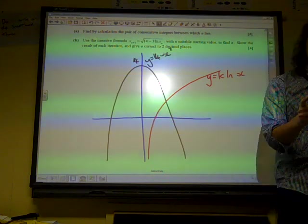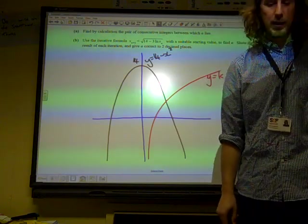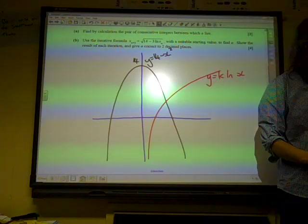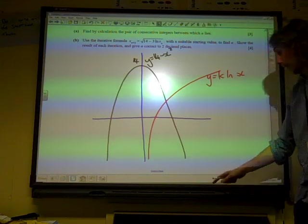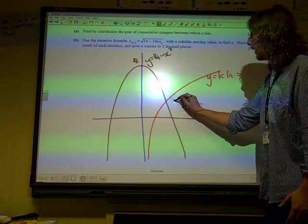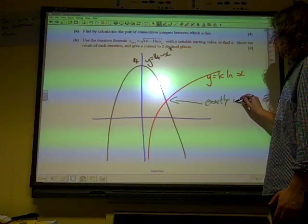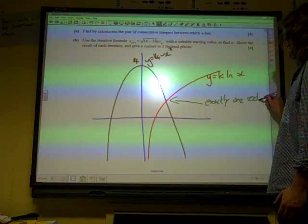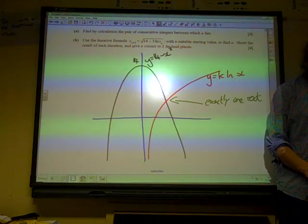And the question said show that there is just one root. Show that the equation has exactly one root. Well, these two only cross at one point. It's quite clear from our diagram that they only cross at one point. So we're going to identify that and say exactly one root, and that's got us our three marks.